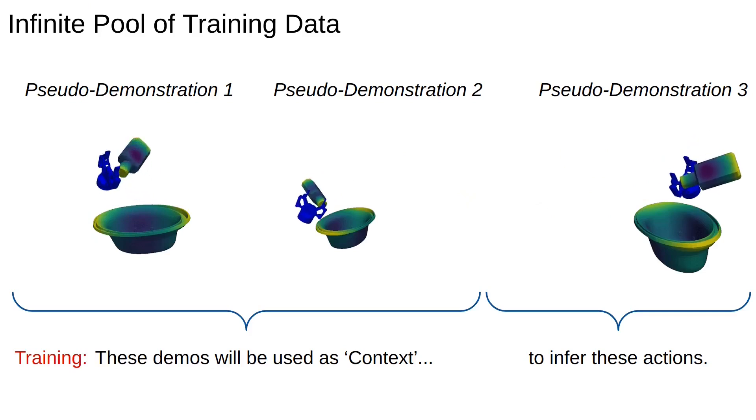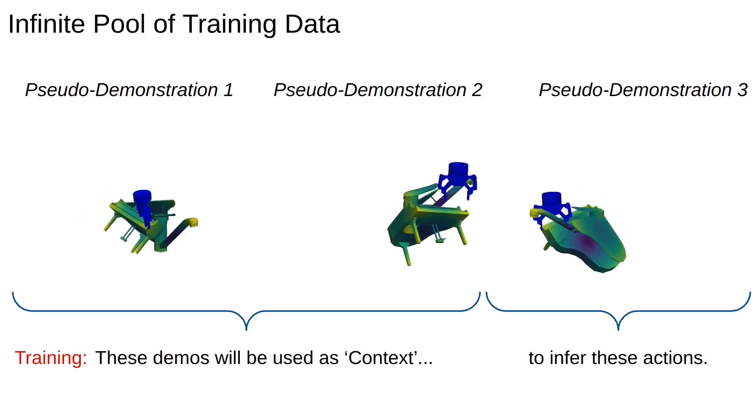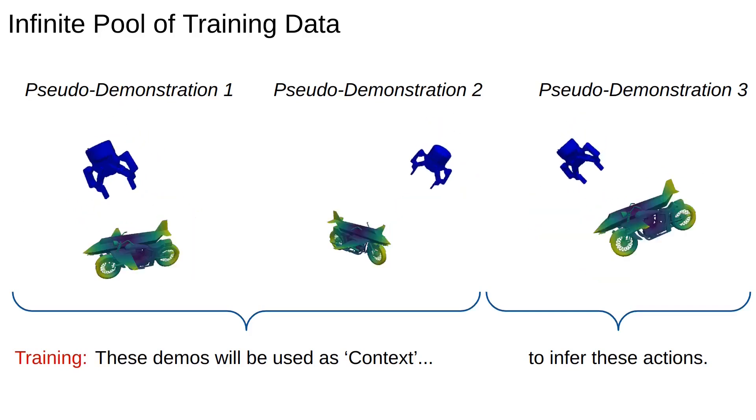Thus, for training our in-context model, we can use a subset of these trajectories performing the same pseudo-tasks to define context while inferring actions from the other ones.